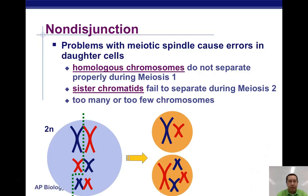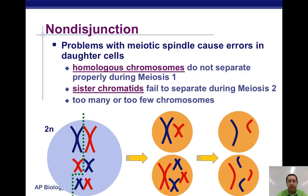Sometimes chromosomes don't separate properly. This is meiosis II — you can see what happens: you have extra copies of one of the chromosomes. The top cell has a missing chromosome, and the bottom cell has an extra copy of a chromosome.